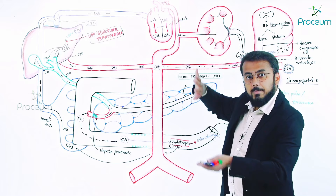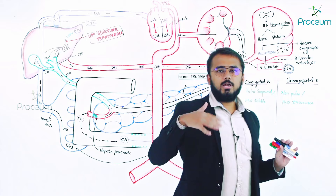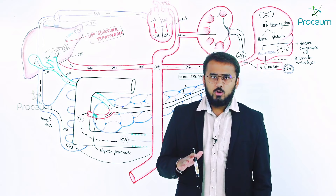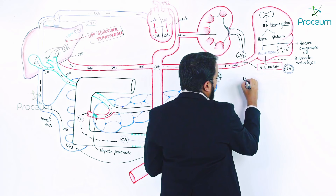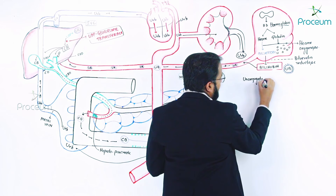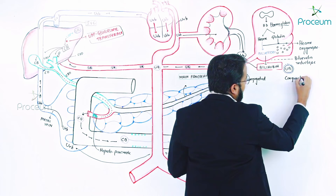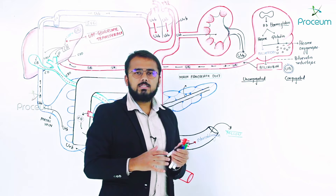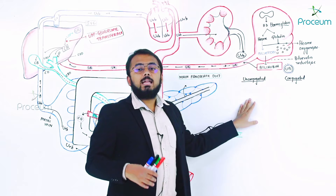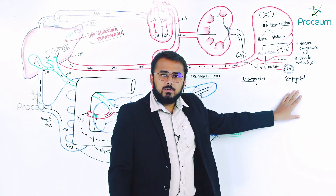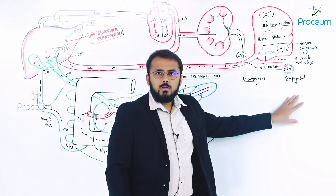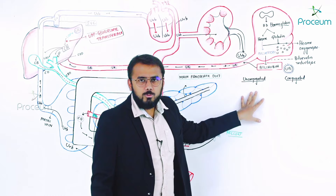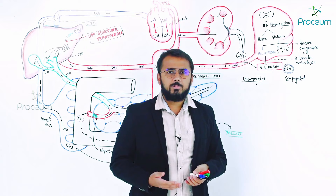Now applying clinical points: there are two types of bilirubin — conjugated and unconjugated. If there is an increase in the level of unconjugated bilirubin, you call it unconjugated hyperbilirubinemia. If there is an increase in the level of conjugated bilirubin, you call it conjugated hyperbilirubinemia.